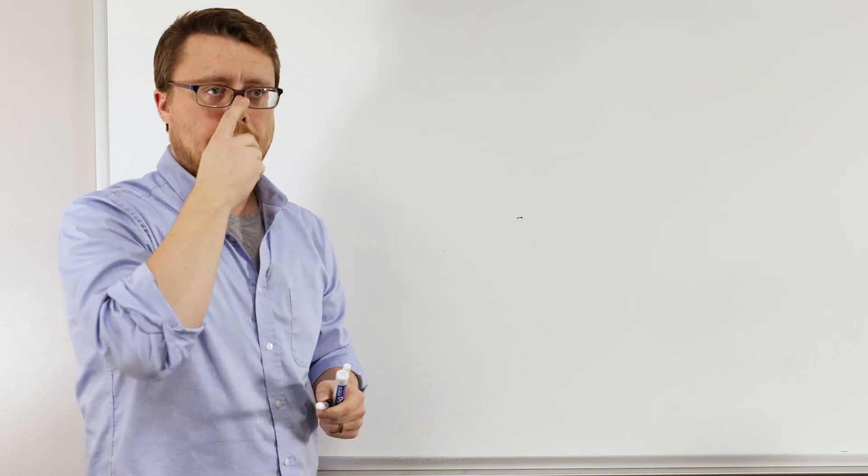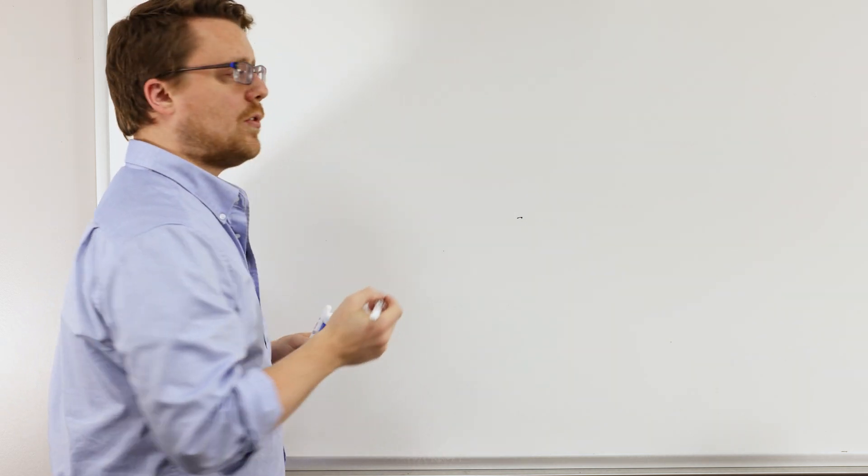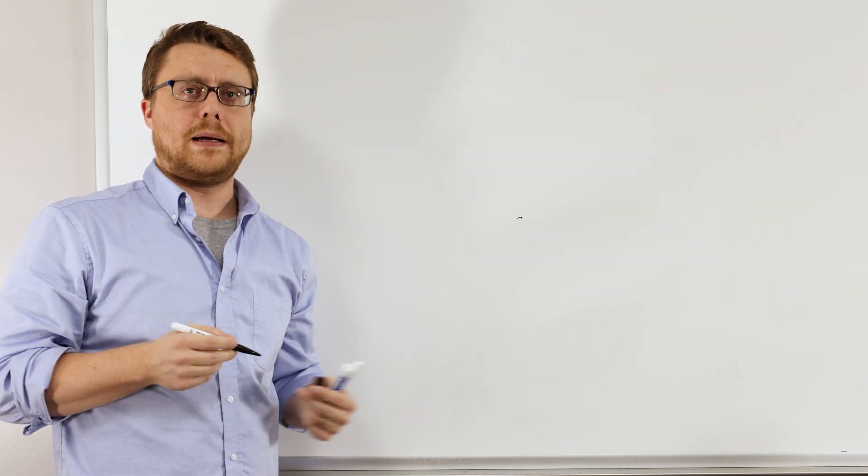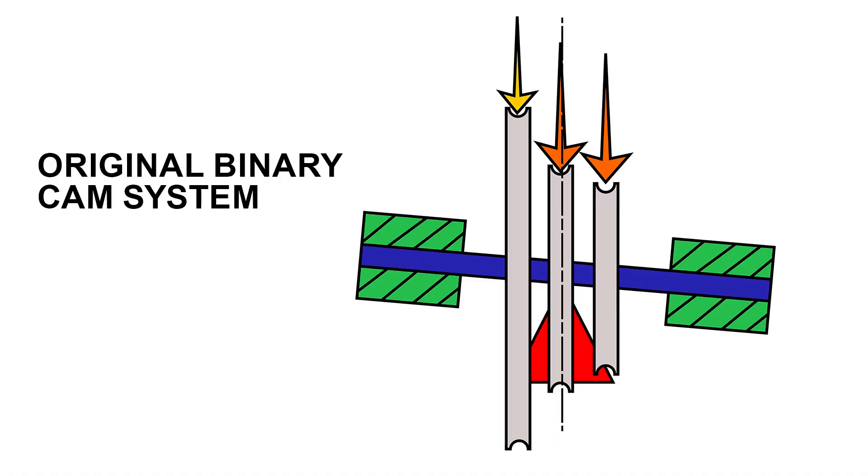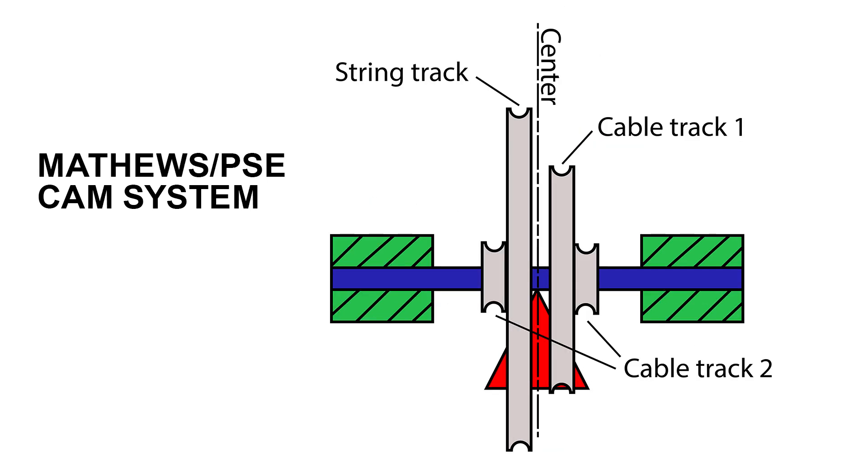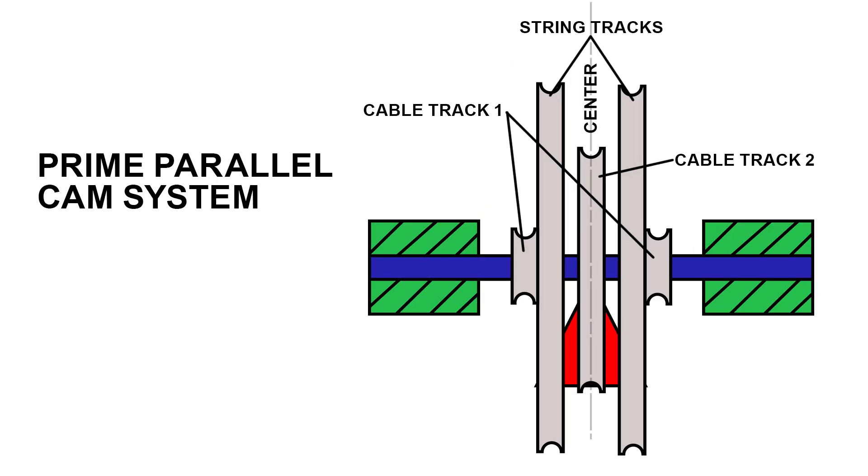Back in 2011, Prime introduced the parallel cam. And this was our first attempt at resolving that uneven load balance issue with the cams. So whereas a typical cam system has the string in a single track, and then the cable is usually off to the side, we developed a system in which the string track was split on either side of the cable. So our string straddled the cable track, which sat in the middle.